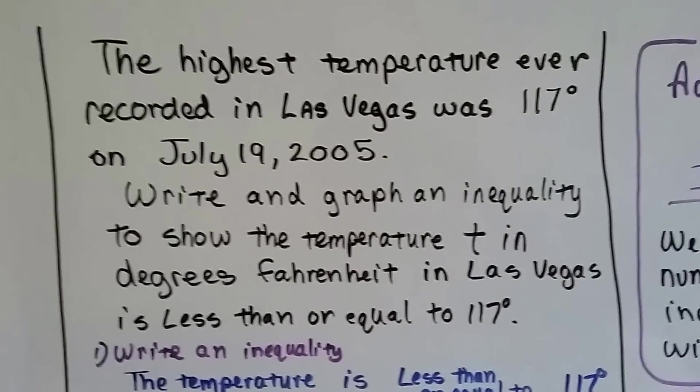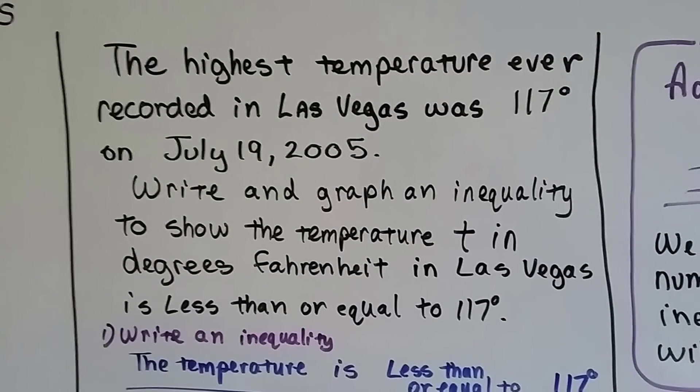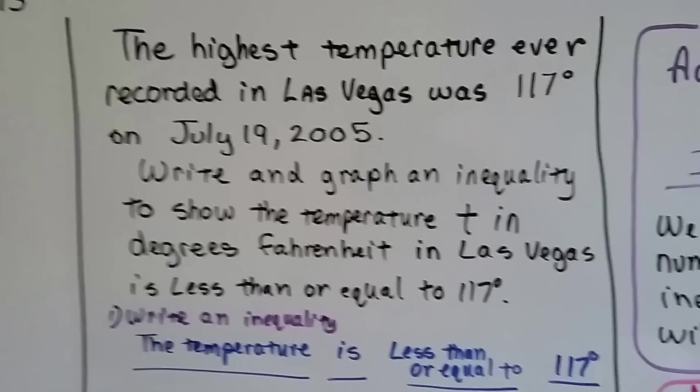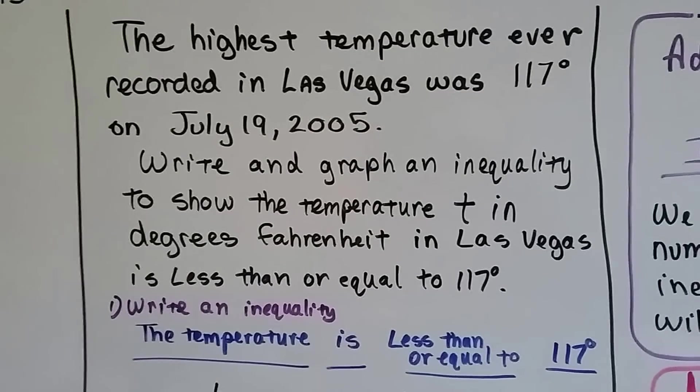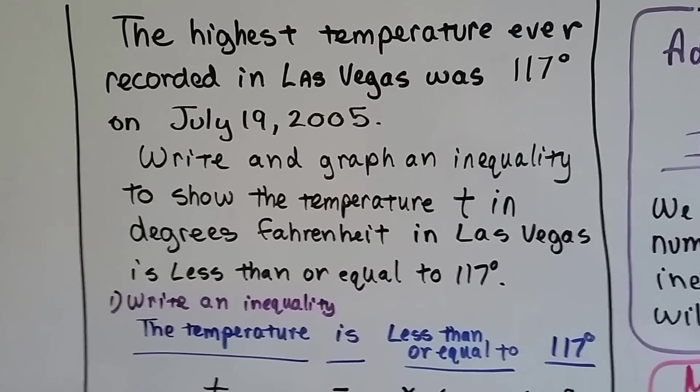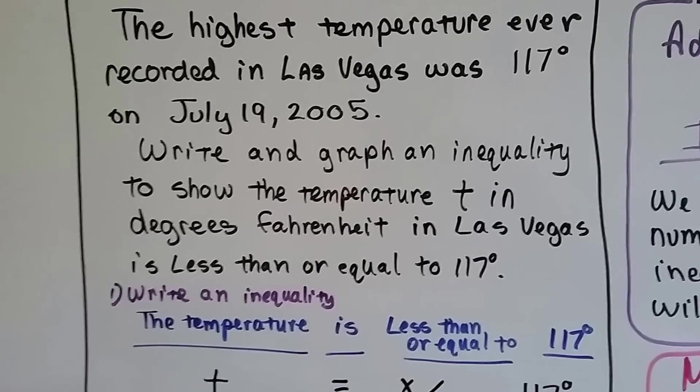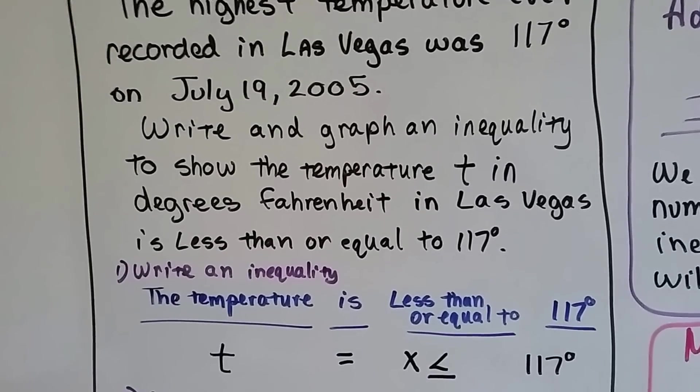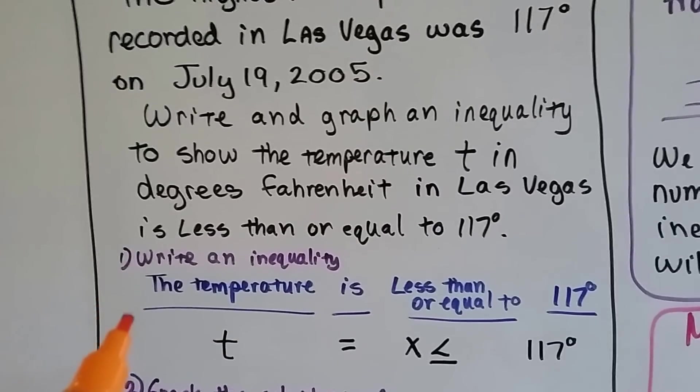The highest temperature ever recorded in Las Vegas was 117 degrees on July 19, 2005. Write and graph an inequality to show the temperature T in degrees Fahrenheit in Las Vegas is less than or equal to 117 degrees. So we're going to write the inequality.